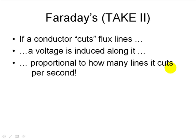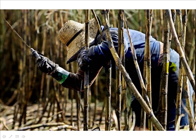Let me give you a visual representation. I imagine that sugarcanes are magnetic flux lines, and the machete is the conductor. If we want to cut more sugarcanes per second, we need a patch of sugarcane that is very dense — the denser the sugarcanes, the more are cut per second. Secondly, the longer the machete, the more sugarcanes are cut per second. And the faster the worker swings that machete, the more sugarcanes per second it will cut.